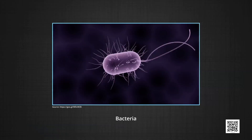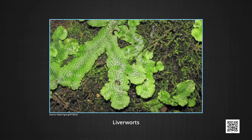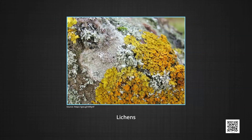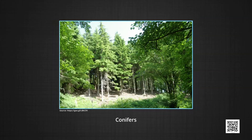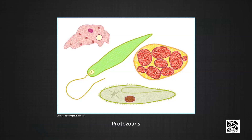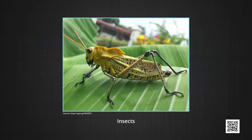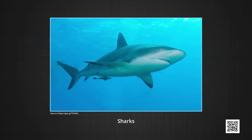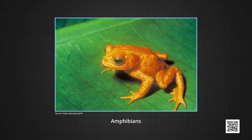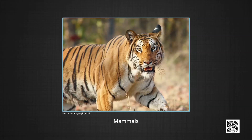According to Carolus, plant kingdom includes bacteria, fungi, algae, liverworts, mosses, lichens, ferns, conifers and all flowering plants. Kingdom Animalia includes protozoans, sponges, jellyfish, worms, insects, sharks and bony fishes. It also includes amphibians, reptiles, aves and mammals.